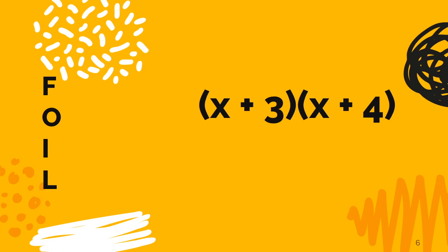FOIL is an acronym. And the F stands for first, so that you will remember to multiply the first two terms, in this case x times x. You have to multiply those two things, which of course you get x squared.